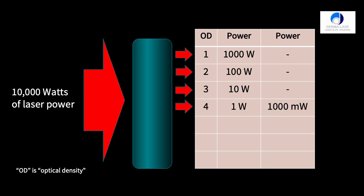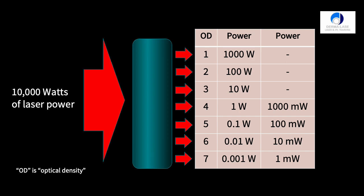An OD of four allows one watt through, which is the equivalent of 1000 milliwatts. OD5 allows 0.1 watts. OD6 is 0.01 watts, which is only 10 milliwatts now. And an optical density of seven, which is quite a high density, will allow one milliwatt of that original 10,000 watts of power to transmit through to the eyes.